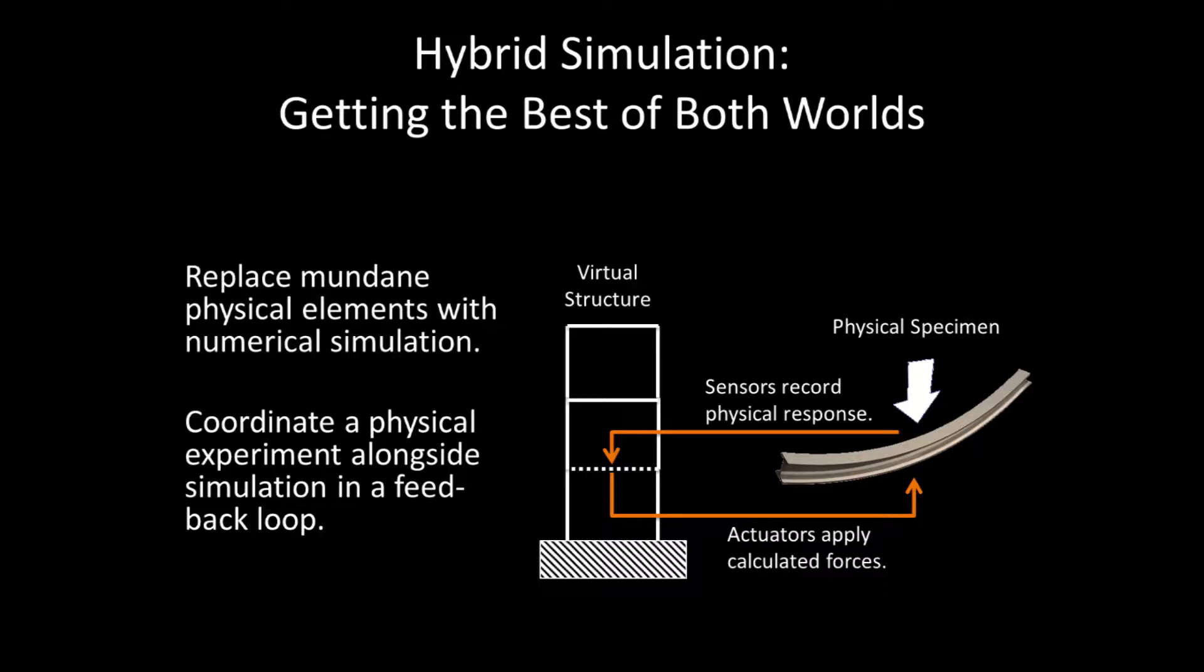At test time, we can use historical records to simulate an earthquake on that virtual part of our test. The computer simulation then computes the forces that should be applied to the physical specimen and uses actuators to do so. A set of sensors records how the physical specimen responds and feeds that data back into the computer simulation.